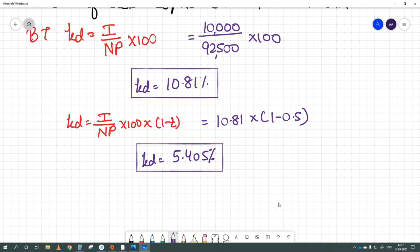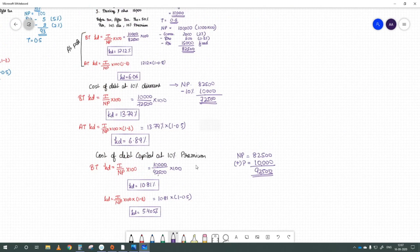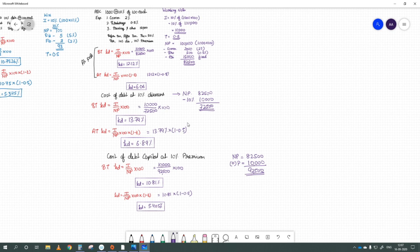At 10 percent discount on face value, the calculation is the same: 10,000 upon net proceeds. For net proceeds at discount, 82,500 minus 10 percent more, so minus 10,000 equals 72,500. So 10,000 upon 72,500 into 100. KD before tax is 13.79 percent. After tax: 13.79 multiplied by 1 minus 0.5 equals 6.89 percent. Now calculate at 10% premium. At premium, net proceeds will be 82,500 plus 10,000 equals 92,500. So 10,000 upon 92,500 into 100 gives KD before tax at premium of 10.81 percent. After tax: 10.81 multiplied by 0.5 equals 5.405 percent.